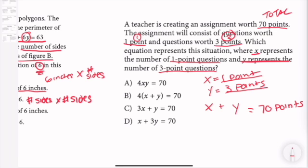However, it's not just going to be x plus y equals 70 points. It's going to be 3y, because it's three points.